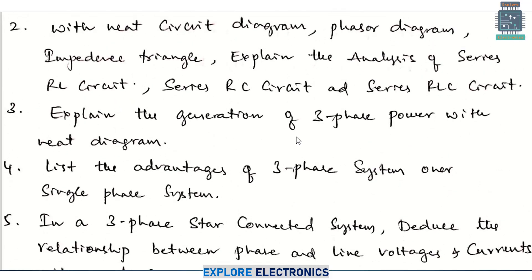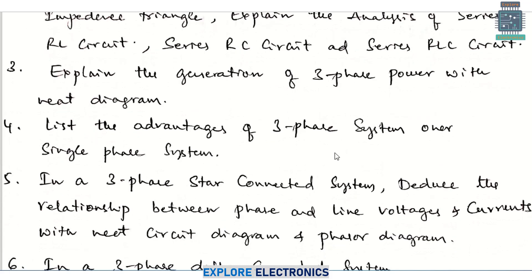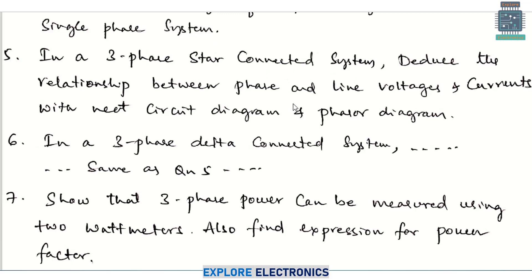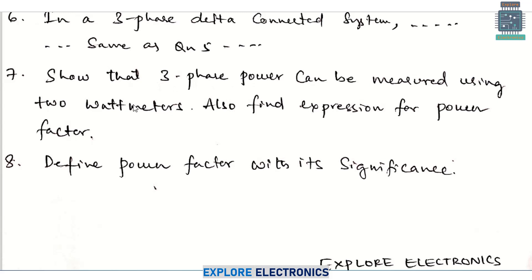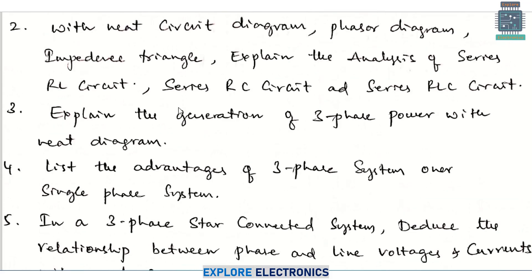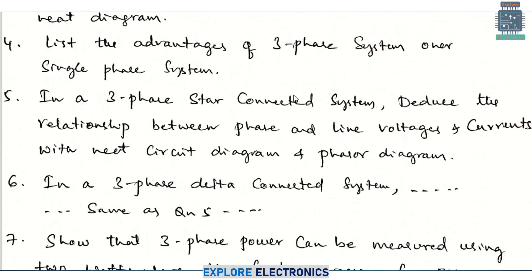Explain the generation of three-phase power with a neat diagram — this question can also be asked. Advantages of three-phase system over single phase is also asked many times in previous exams. In a three-phase star connected system and also in a delta connected system, you need to deduce or derive the relationship between phase and line voltages and currents — this is repeatedly asked. Also, show that three-phase power can be measured using two watt meters. Define power factor with its significance. Concentrate on RL, RC, and RLC circuits, generation of three phase, and the star and delta connection relationships.